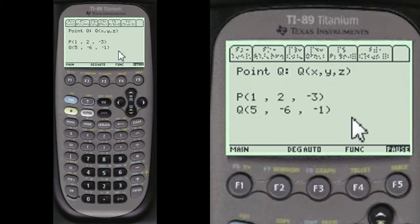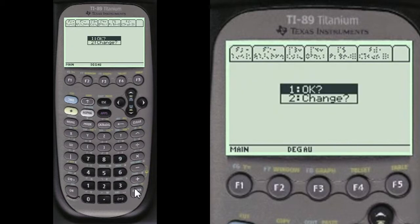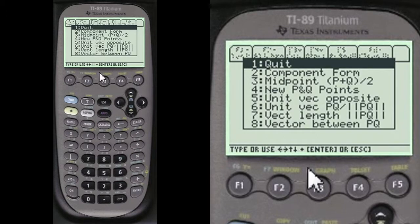So those are the points that we have, P and Q. I always show you what you've entered so you can change it if you want. And we're going to go down here to number 7, press number 7 for length.